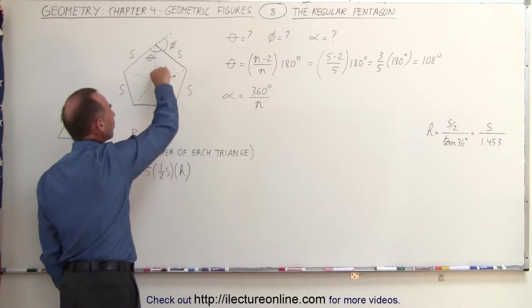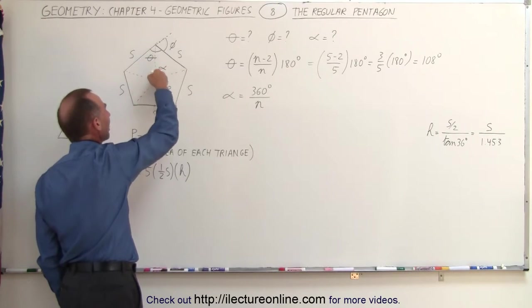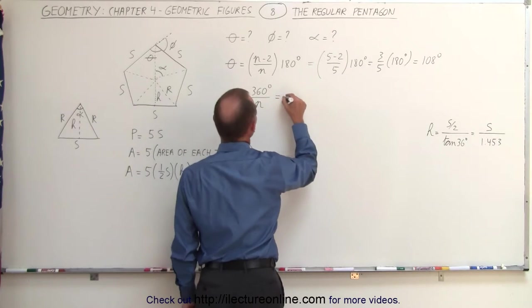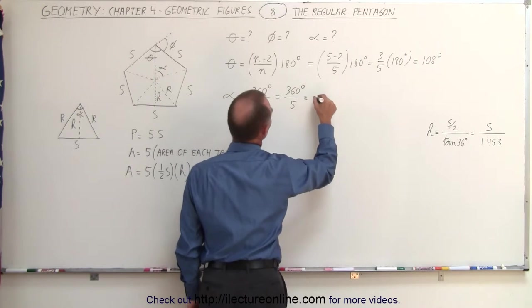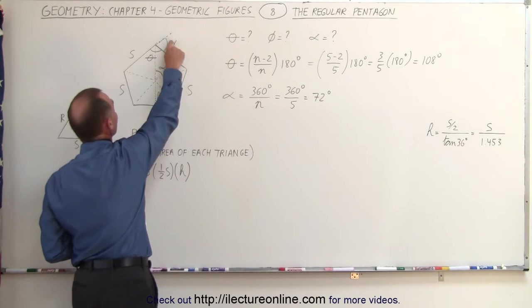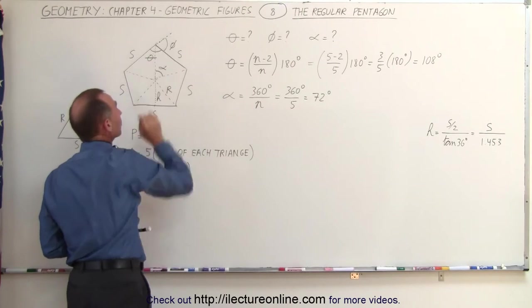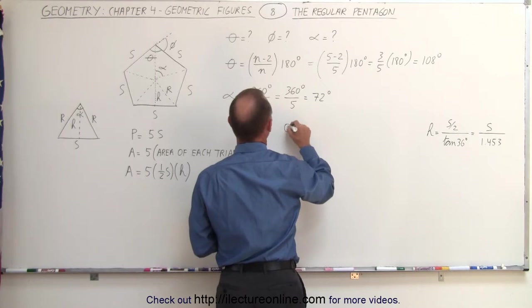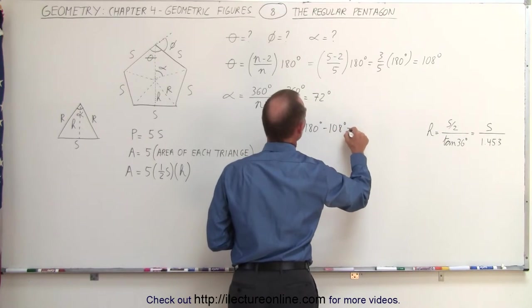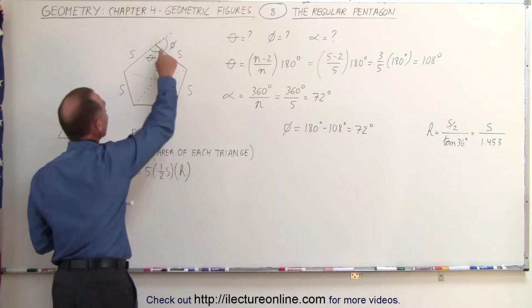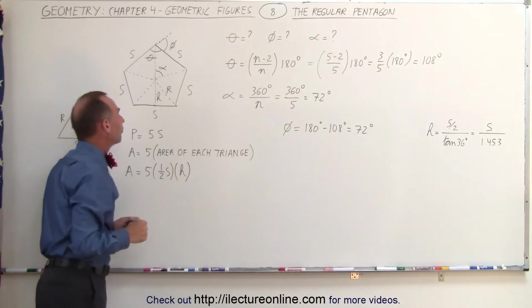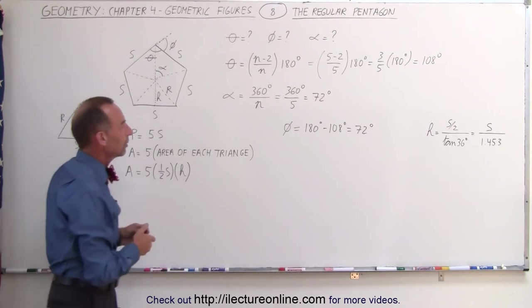The tip angle alpha of each of the five triangles can be found by noting that going all the way around the center is 360°, and there are five triangles, so alpha = 360° / 5 = 72°. Then phi, the supplementary angle to theta, equals 180° − 108° = 72°. So the supplementary angle at each corner and the tip angle of each triangle are both equal to 72°.